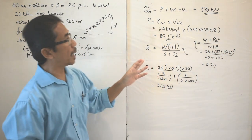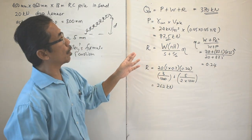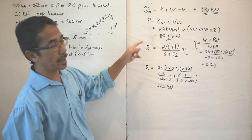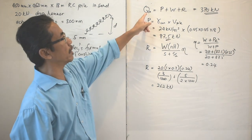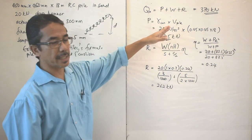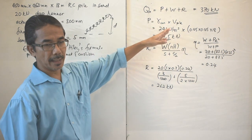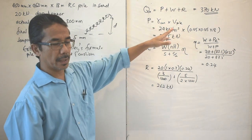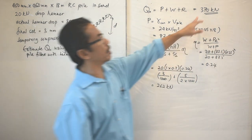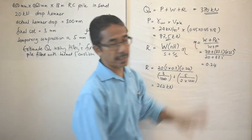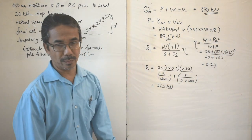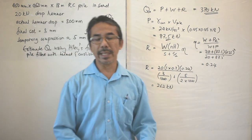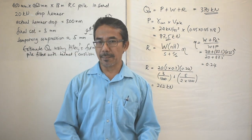If you need to find the allowable load, divide Q_u by the safety factor. For example, with a safety factor of 2: allowable load = 370 / 2 = 185 kN. That is how we estimate pile capacity using the Hiley formula.